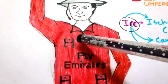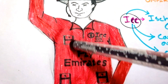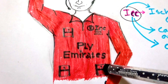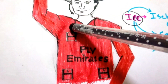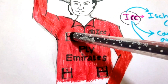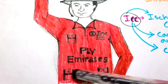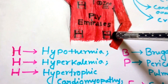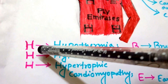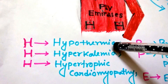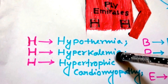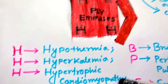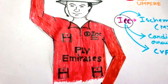In his t-shirt we can find 3H — there are 3 H-shaped pockets. By the 3H we can recall hypothermia, hyperkalemia, and hypertrophic cardiomyopathy.